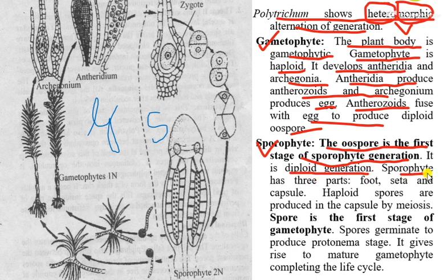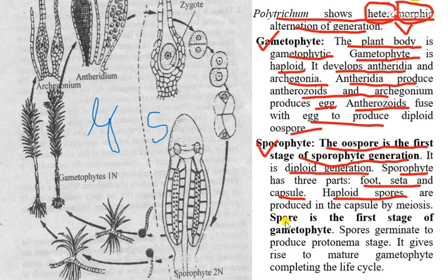The sporophyte has three parts: foot, seta, and capsule. The capsule will produce spores. The spores are haploid, and with the formation of haploid spores, the sporophytic phase will end and the gametophytic phase will begin.